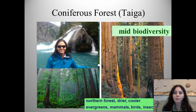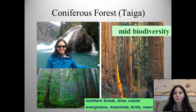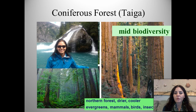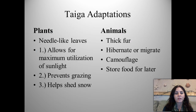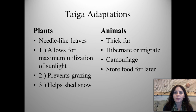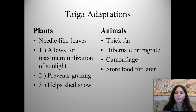The coniferous forest, or taiga, has mid-biodiversity and is characterized by evergreen trees with needles and cones. Found in the north, it's much drier and cooler than the deciduous forest, and is home to many mammals, birds, and insects. Plant adaptations include needle-like leaves for maximum sunlight utilization, deterring grazing, and shedding snow so branches don't break. Animal adaptations include thick fur for winter warmth, hibernation or migration, camouflage, and storing food.